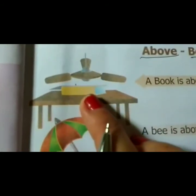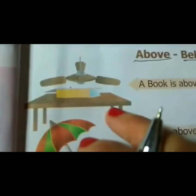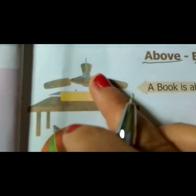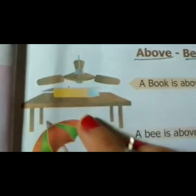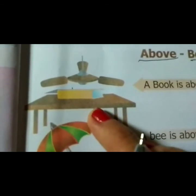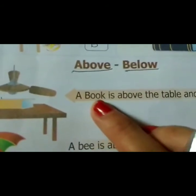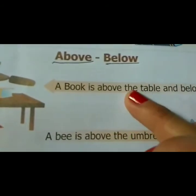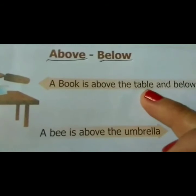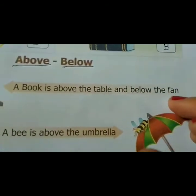Fan, book, table — here three things. First: fan. Second: book. Third: table. A book is above the table and below the fan.